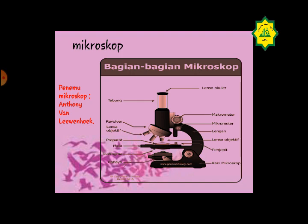Bagian-bagian mikroskop: lensa okuler, tabung, makrometer, mikrometer, lengan, lensa objektif, penjepit, kaki mikroskop, revolver, preparat, meja, diafragma, dan cahaya.